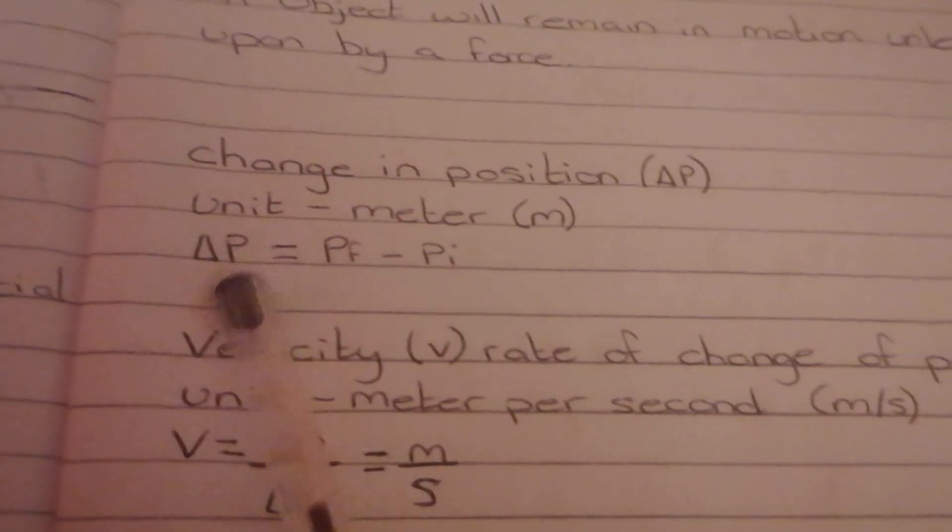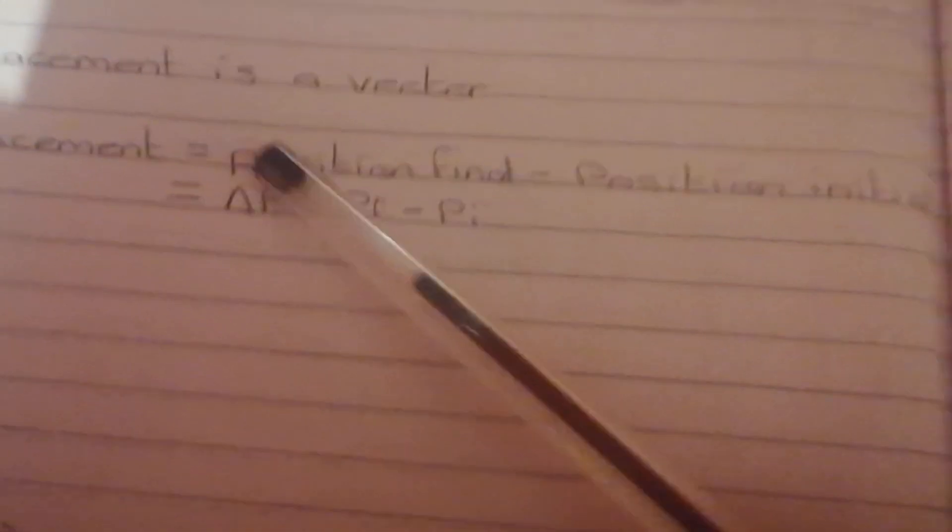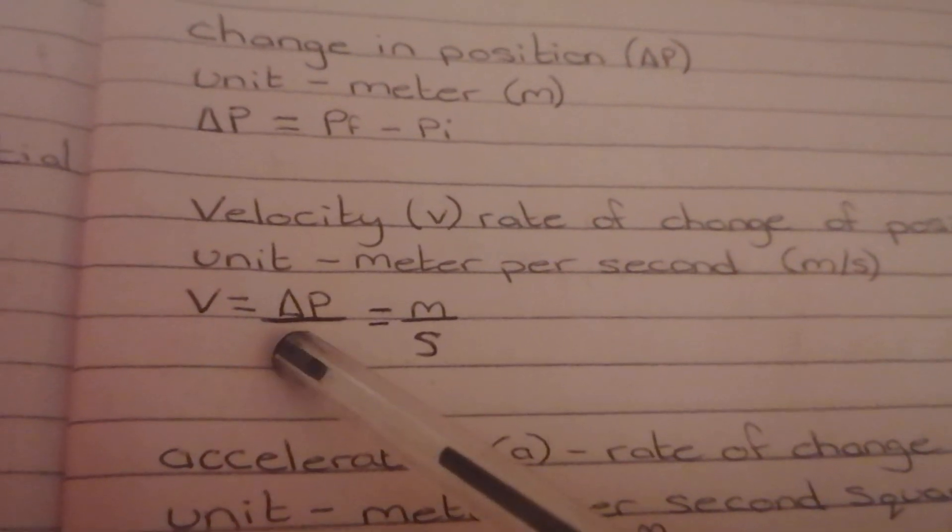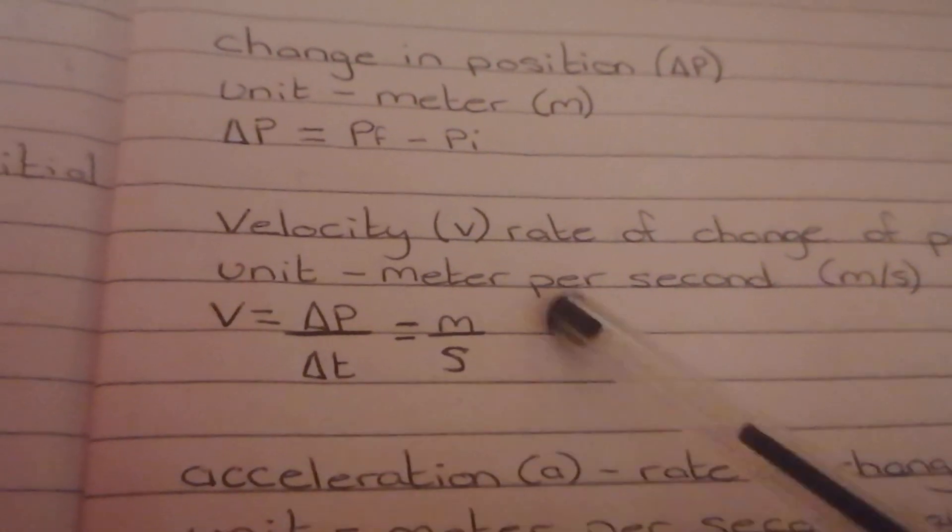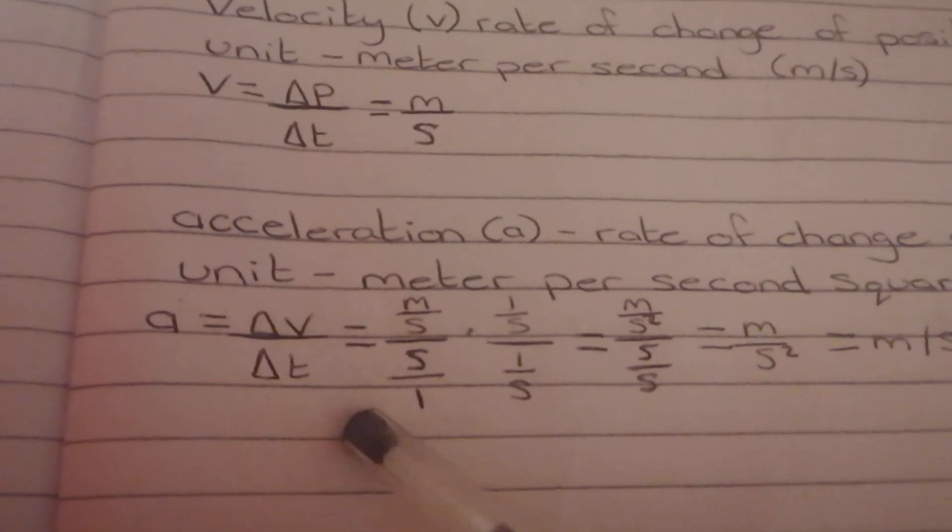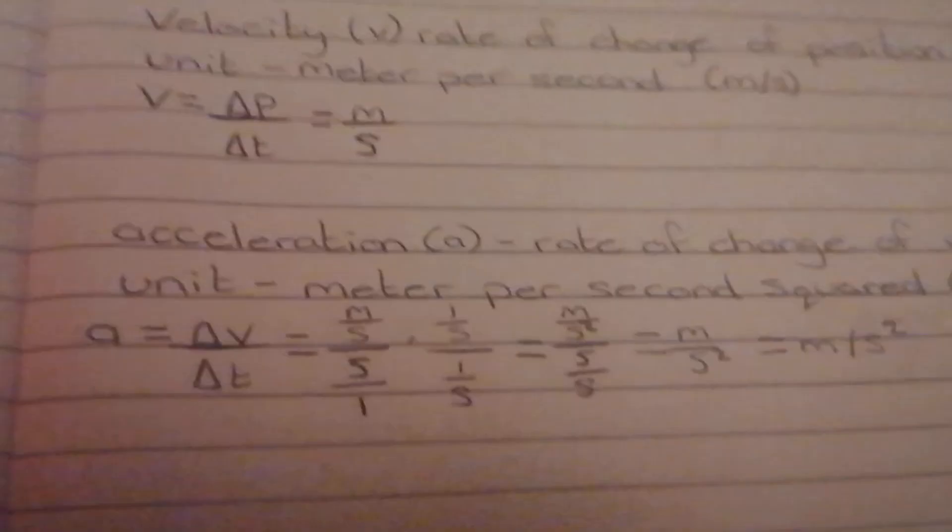Okay, so if we wanted to calculate the change in position we could do the position final minus the position initial which again is just the same as displacement which is a vector. If you wanted to find the velocity we could do the changing position divided by the changing time and that would give you meters per second. If you wanted to find the acceleration we could do the change in velocity divided by the change in time and that will give you meters per second squared. So that would give you an acceleration.